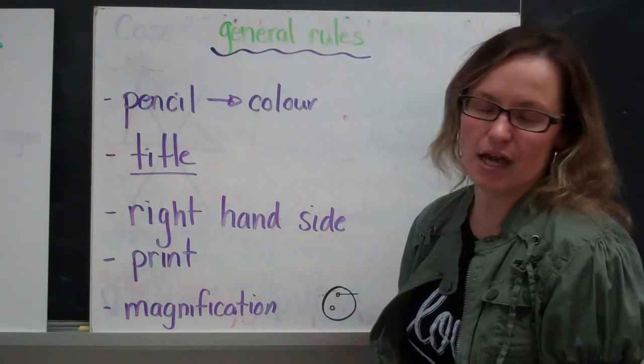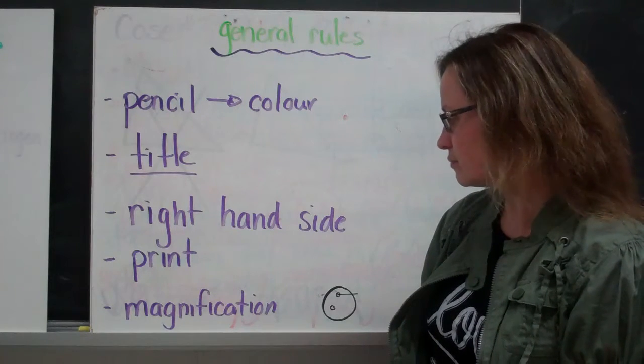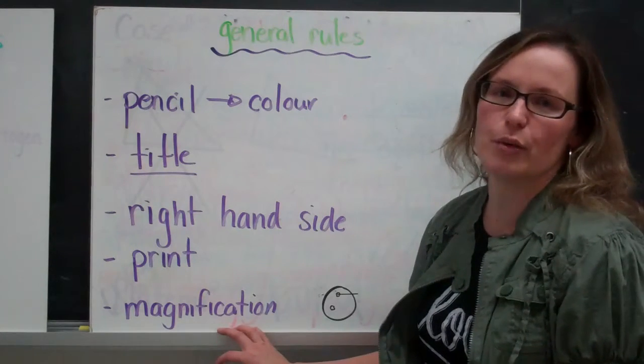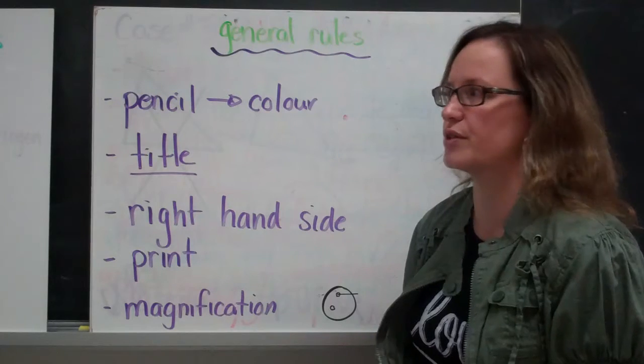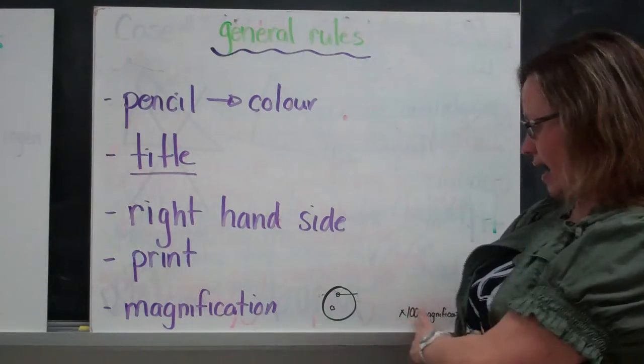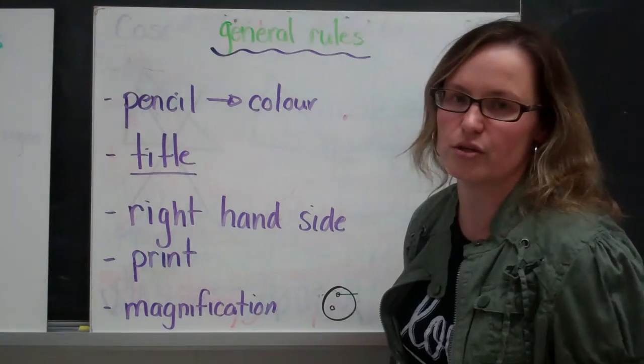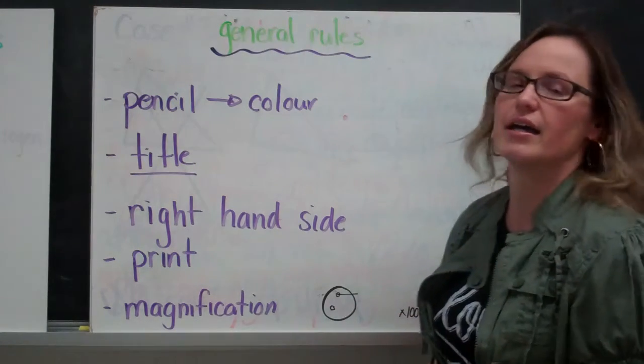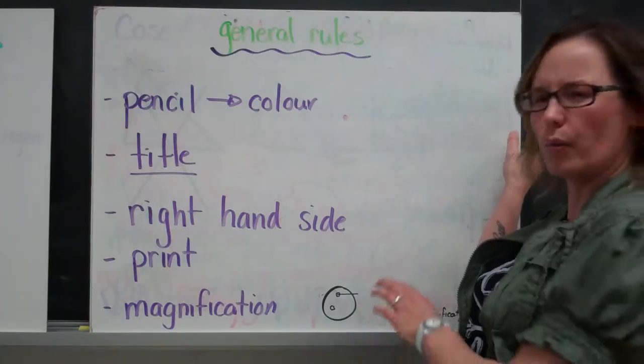All of your labels should be printed. Nothing should be written in cursive. If you're doing a lab, you would include a magnification. So this is when you're looking at something through a microscope and you would show a magnification of the details that you saw. And you would identify the magnification. But we won't need that for our drawing.